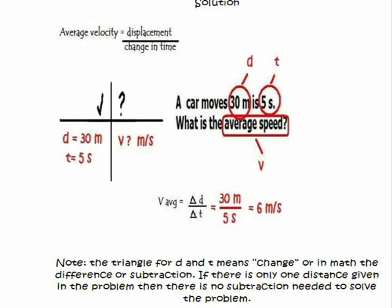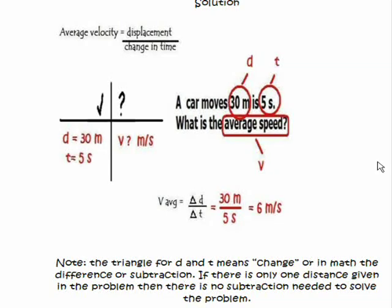Finally, we get to the solution. Once we've done our circling, labeling, and set up our data table, we plug our data into the equation. Average speed equals distance divided by time. We substitute 30 meters divided by 5 seconds and end up with 6 meters per second. Our unit is meters per second, which matches exactly what we expected. Note: the triangle for D and T means change or subtraction. If there's only one distance given, there's no subtraction needed.